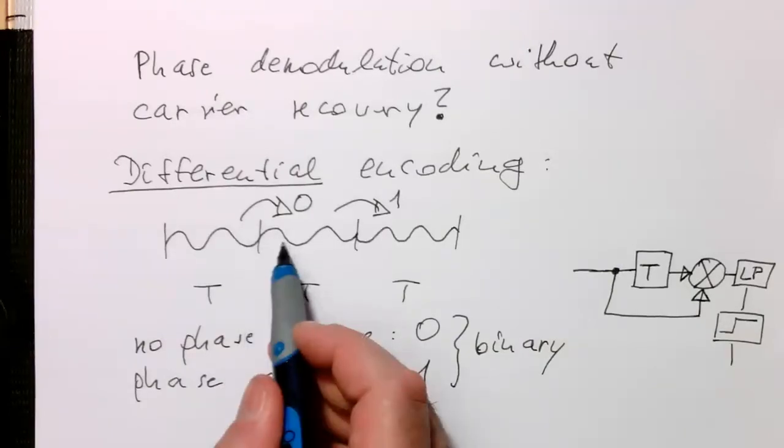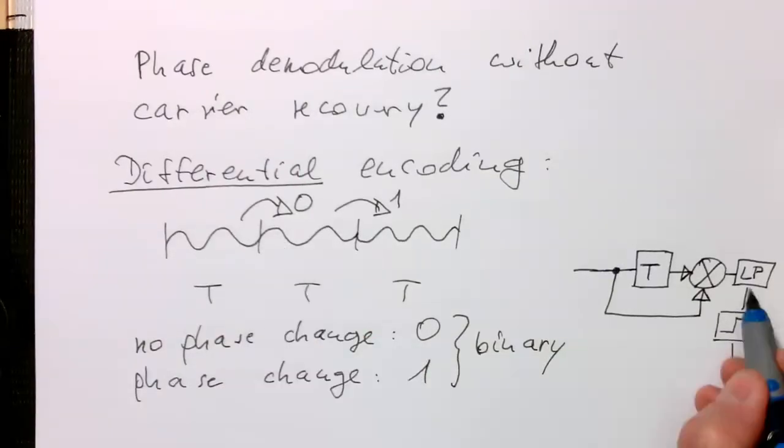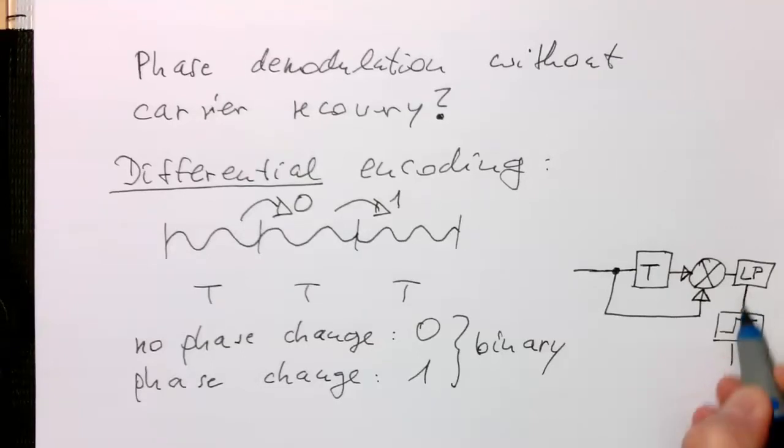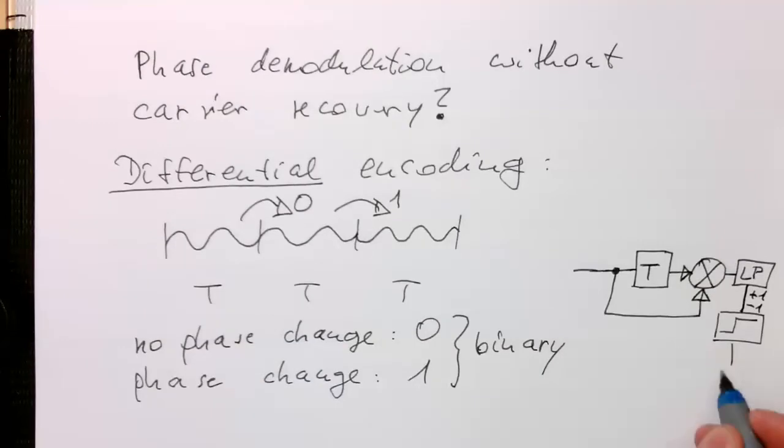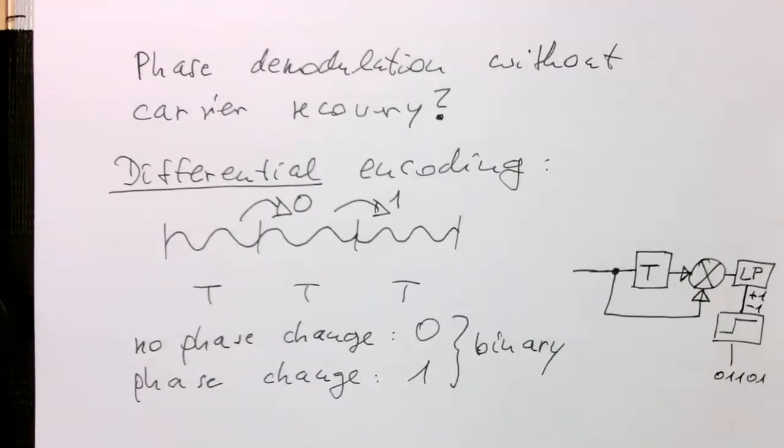So in case of the zero, this here gives us at the output a one. And in case of the one, this gives us here a minus one at the output. And so then we are getting these two different possibilities and are able to decode our...